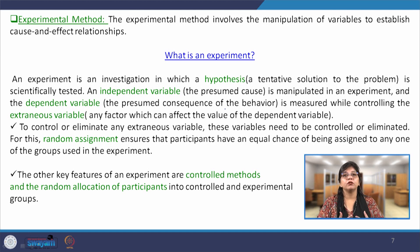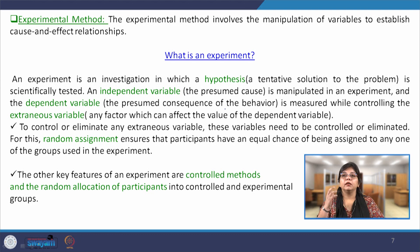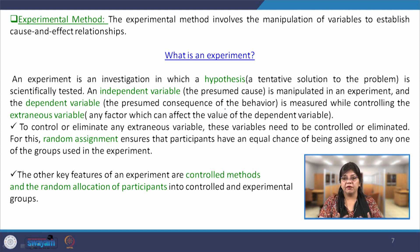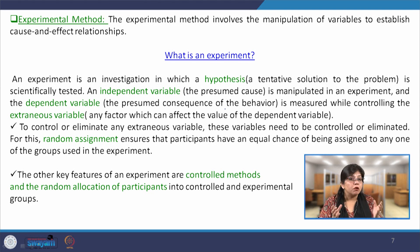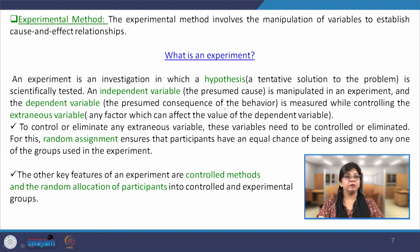The next method is the experimental method. This method involves manipulation of variables to establish the cause-effect relationship. For instance, consider the impact of stress on the academic performance of students. How this relationship can be established requires the inclusion of variables, where the degree of those variables can be manipulated by the researcher. This is the basis of the experimental method — manipulation of variables is done in a scientific manner to establish and demonstrate the cause-effect relationship of behavior.